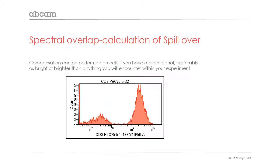For PSY 5.5 of the blue laser with a 710 emission bandpass filter in front, we have this nice negative and this nice positive here. Compensation can be performed quite easily if you have a very bright signal like this, with lots of cells that are positive and a nice negative population.